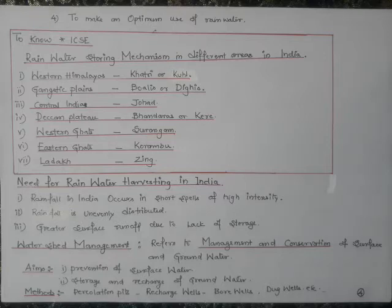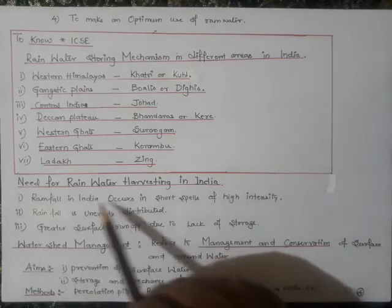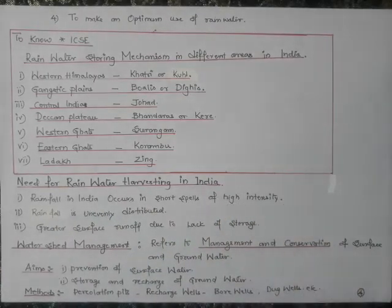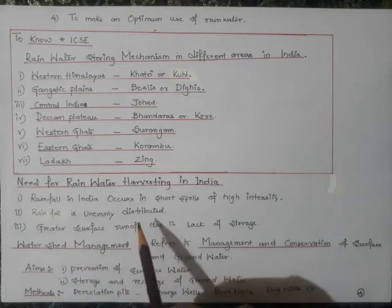There can be a board exam question: what is the need for rainwater harvesting in India? Rainwater needs to be harvested because rainfall in India occurs in short spells of high intensity — the duration of rain is very short, though intensity may be high — which is not sufficient to ensure long-term supply of water. Additionally, rainfall is also not evenly distributed.